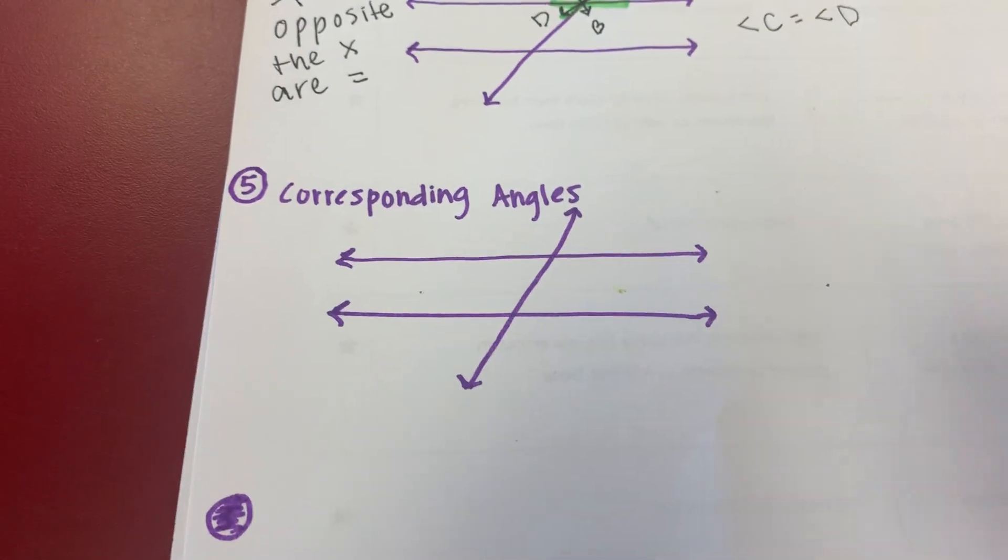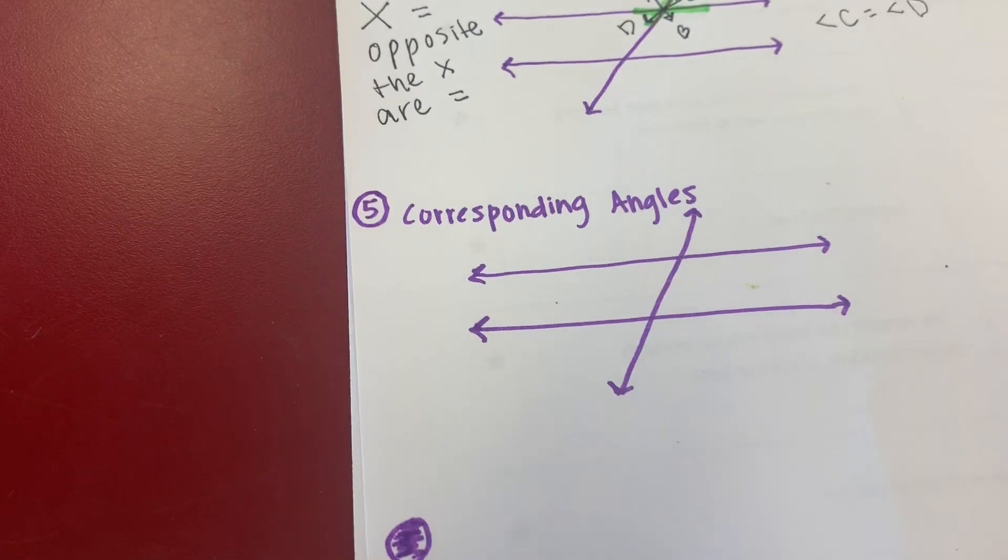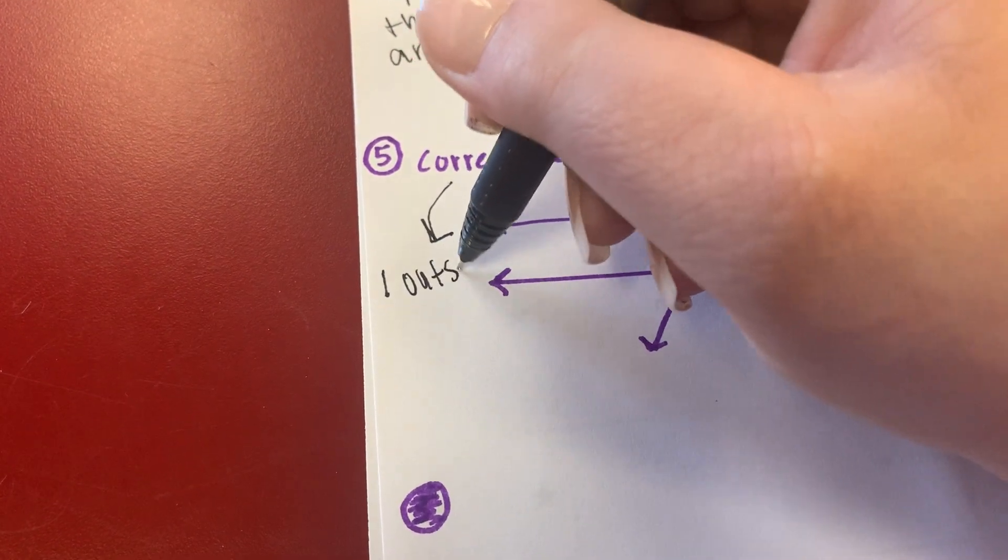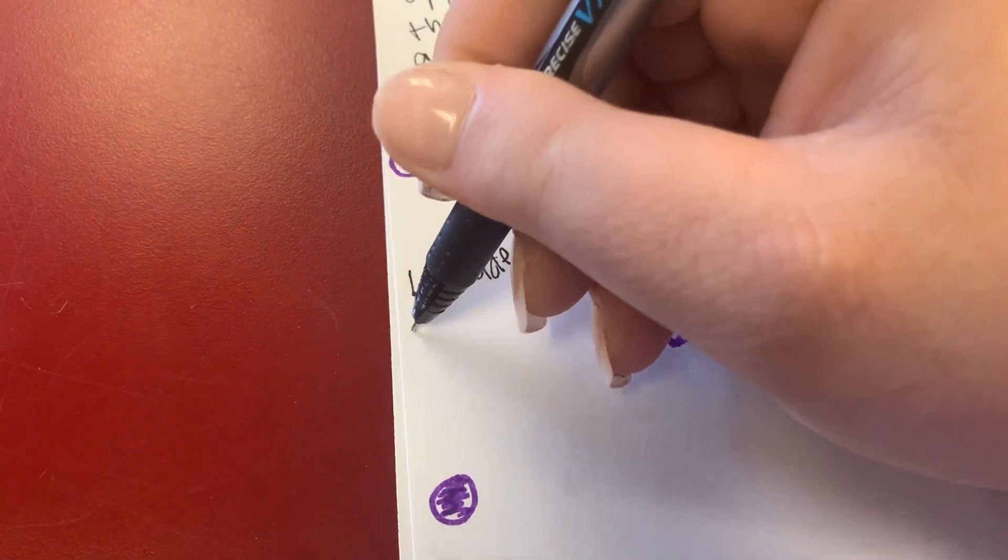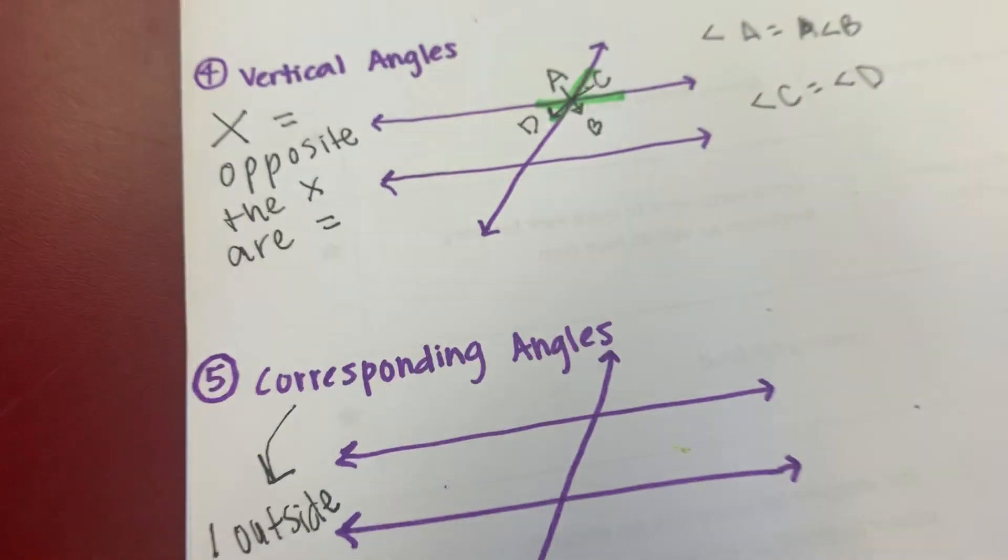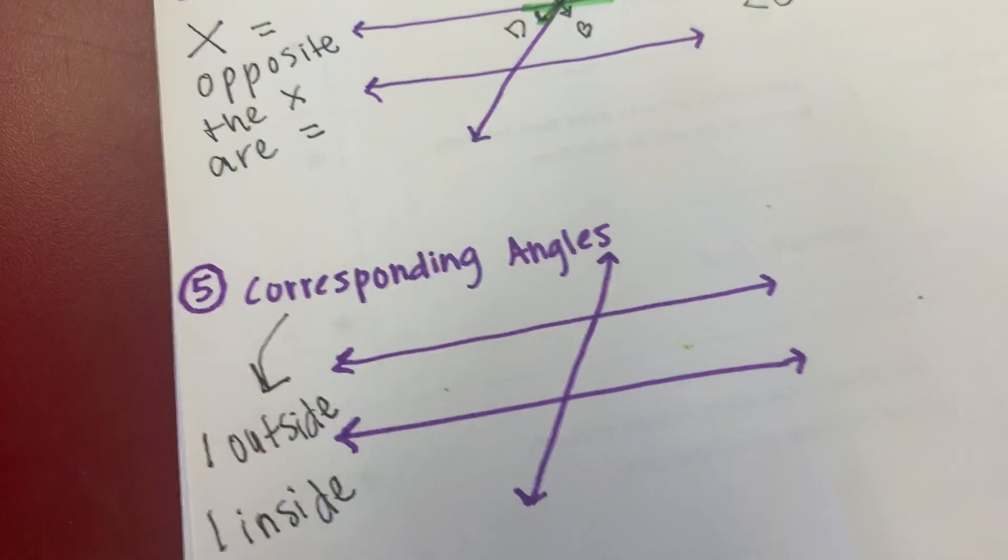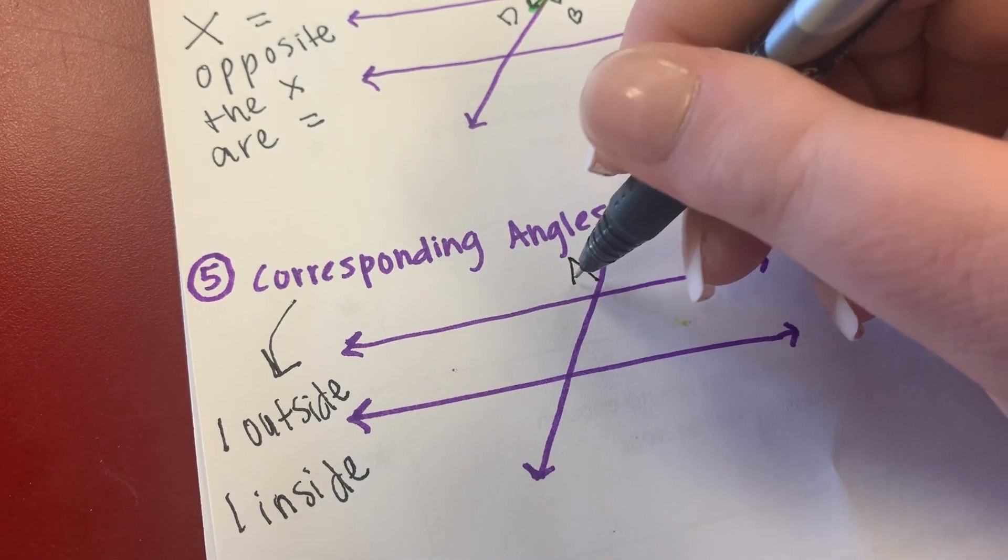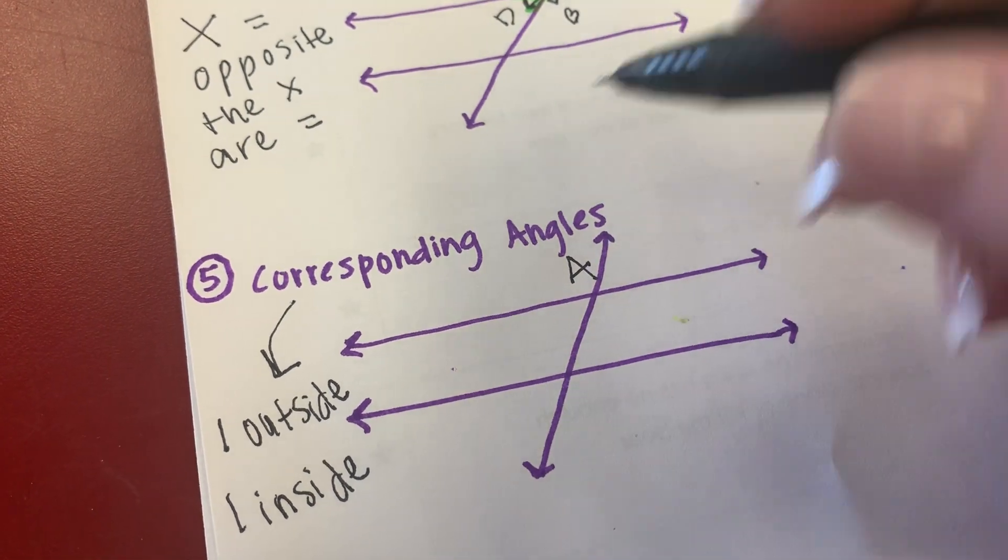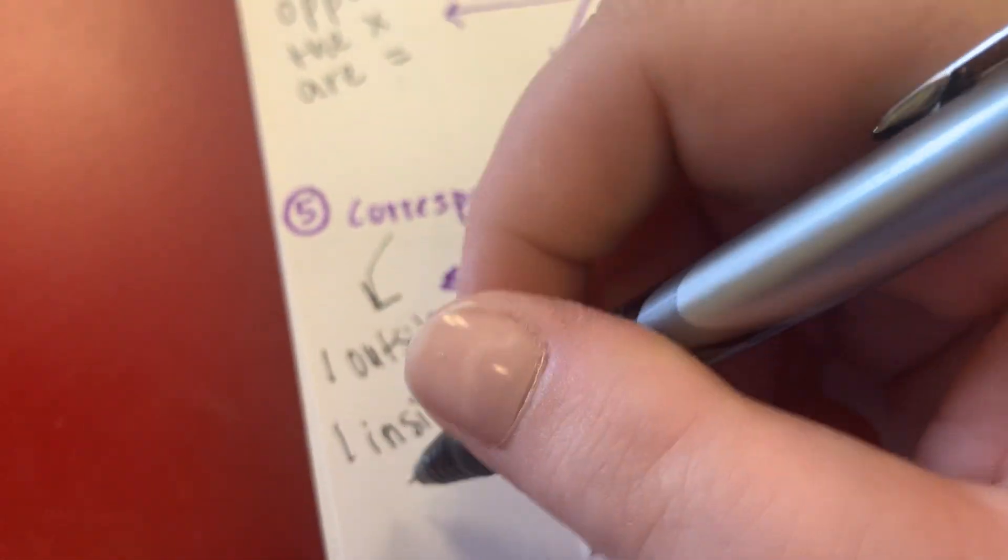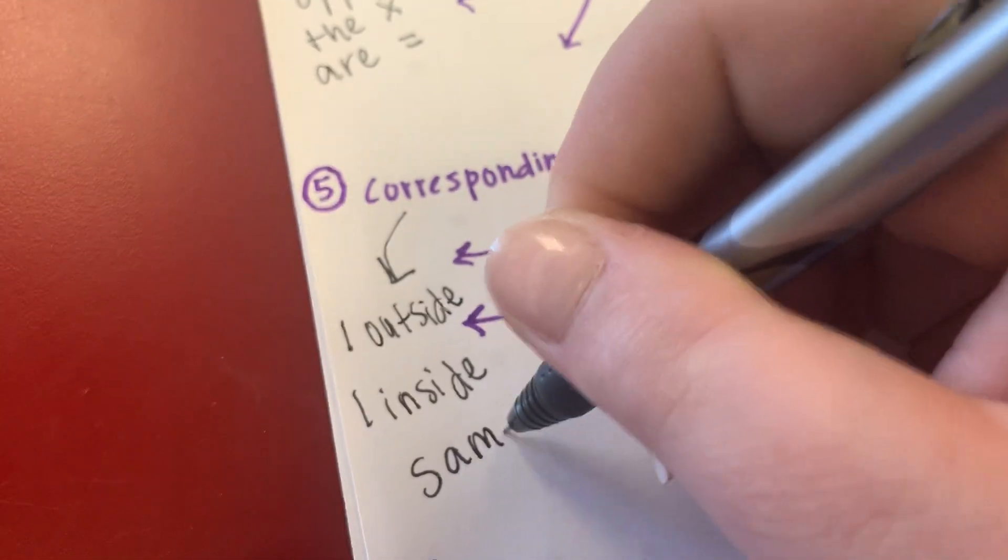And the last one is corresponding. Corresponding is where you're going to have one on the outside and one on the inside. So what that means is, let's say I have an angle here, A. Where would the, on the same, so let me write that down too. It's got to be on the same line.